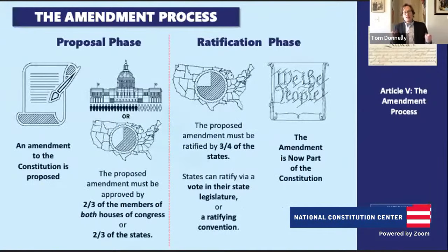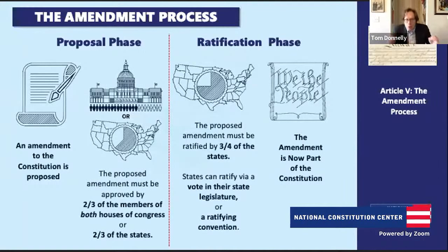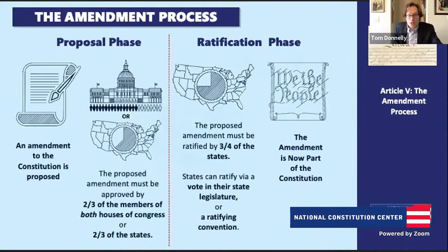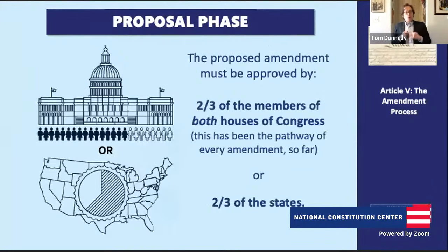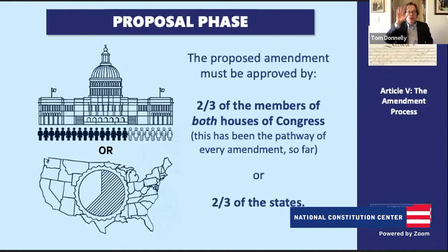There are two really big steps in this process. First, we have the proposal phase. This is where you start with an idea — a big idea or even a small idea — about how you want to amend the Constitution. There are two formal ways that idea can be proposed. One way is through Congress: if you can get support from two-thirds of the members of both houses — two-thirds in the U.S. House of Representatives and two-thirds in the U.S. Senate — then you can formally propose your amendment to the states for ratification or approval.